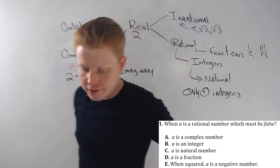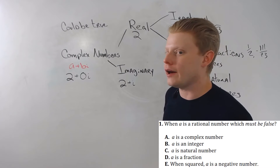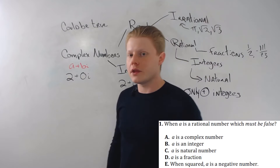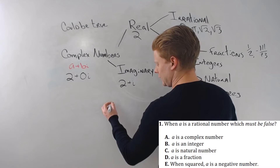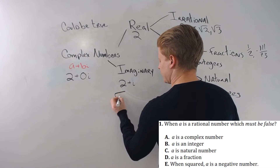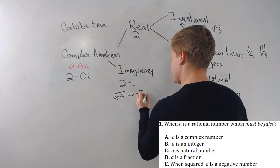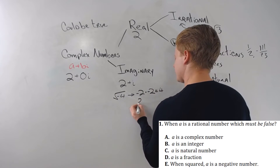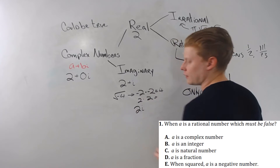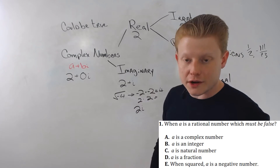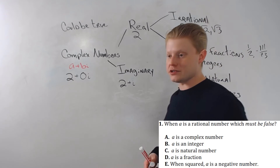Now, 'when squared, A is a negative number.' You need a little knowledge of i here. The reason i exists is because we can't have real numbers squared giving negative numbers. If I wanted the square root of negative four — it's not negative two times negative two, because that's four, and not two times two either. That gives something like 2i. So if squaring a number gives a negative result, it's an imaginary number — and that can't be true for a rational number.